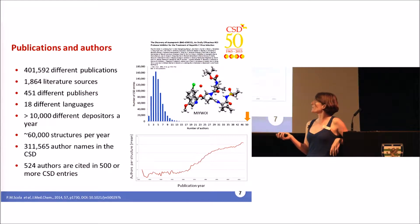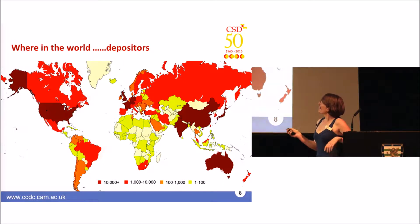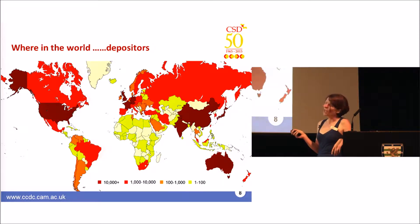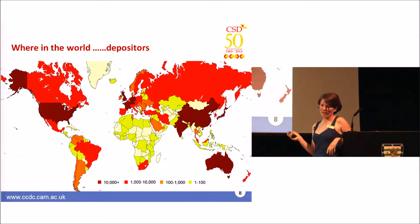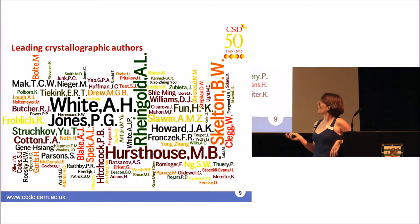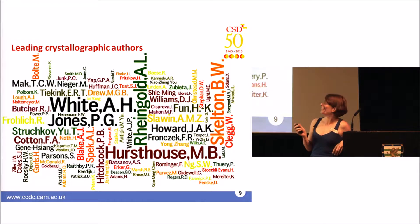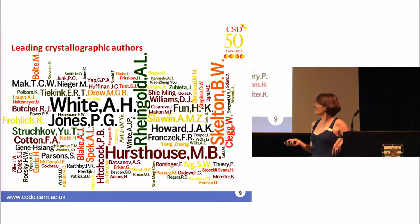We've got over 300,000 author names in the CSD, and depositions are coming from all around the world — lots from the UK, Japan, and America, but also increasing contributions from China and India. With over 130 countries depositing data, we also see countries like Algeria, Kenya, and Mozambique. This word cloud shows the most prolific authors in the CSD — and it's my pleasure to see some of you in the audience, including Mike, Simon, and Judith, and many more.